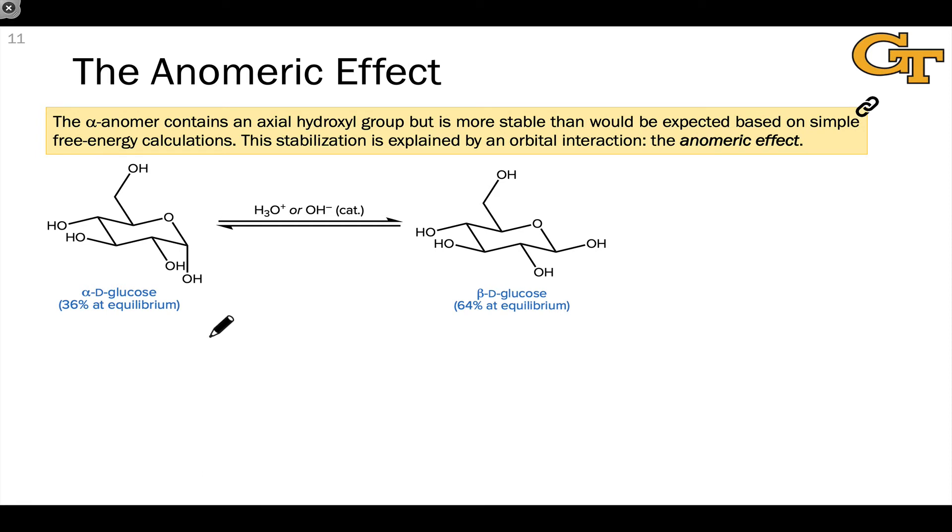There's one last interesting observation about the ratio of anomers at equilibrium for glucose, and the same phenomenon happens with other monosaccharides. This 64 to 36 percent ratio is actually smaller than we might expect at first glance, particularly thinking about cyclohexanes.